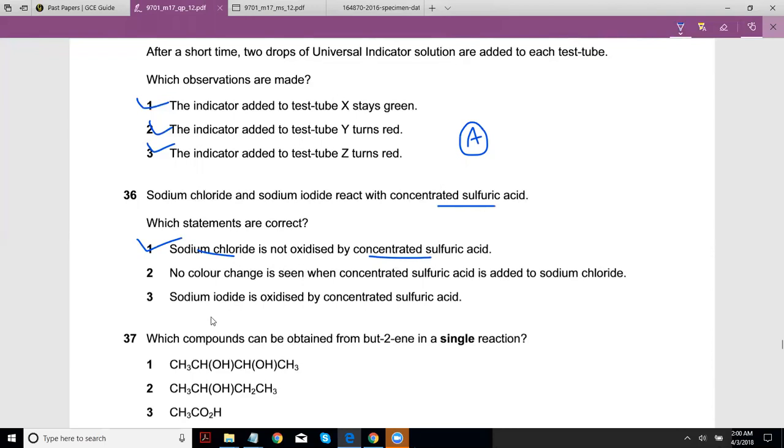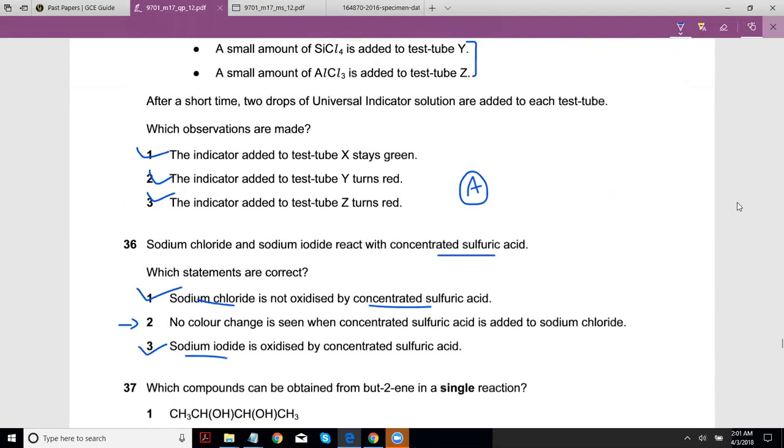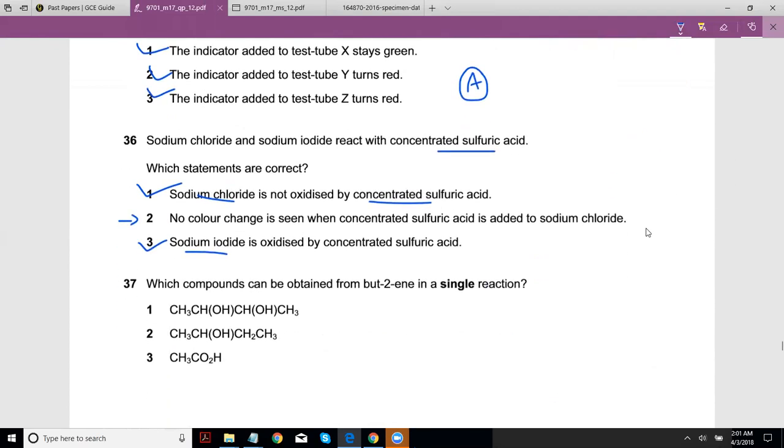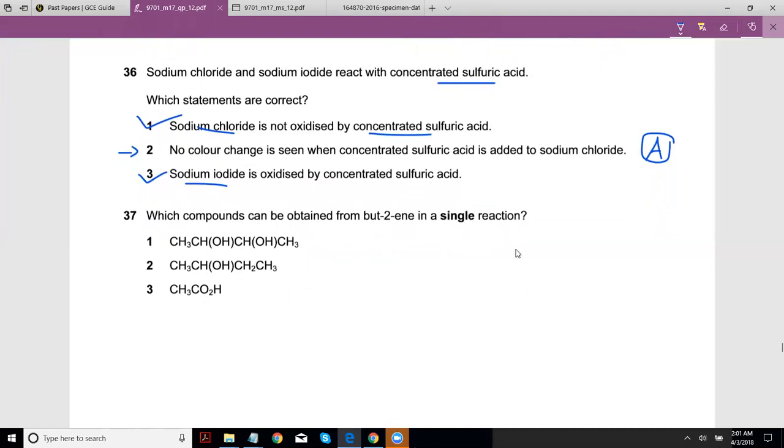So NaCl has less oxidizing power, so it's not oxidized. However, sodium iodide is oxidized by concentrated sulfuric acid - that's for sure, right? Because NaBr and NaI have less oxidizing power than concentrated sulfuric acid, so it can oxidize NaBr and NaI. If one and three are correct, I don't even think you have an option where it's just one and three, so it has to be A. So I guess the color change must be observed.